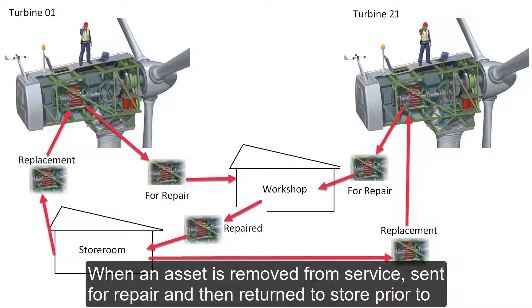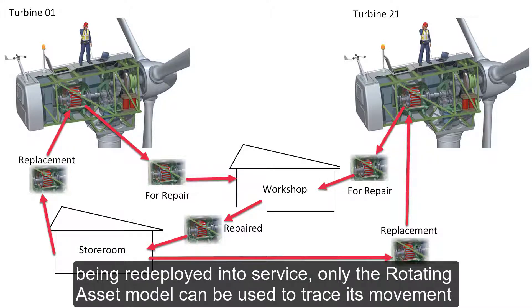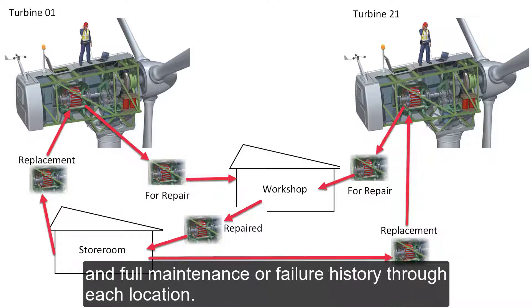When an asset is removed from service, sent for repair and then returned to store prior to being redeployed into service, only the rotating asset model can be used to trace its movement and full maintenance or failure history through each location.